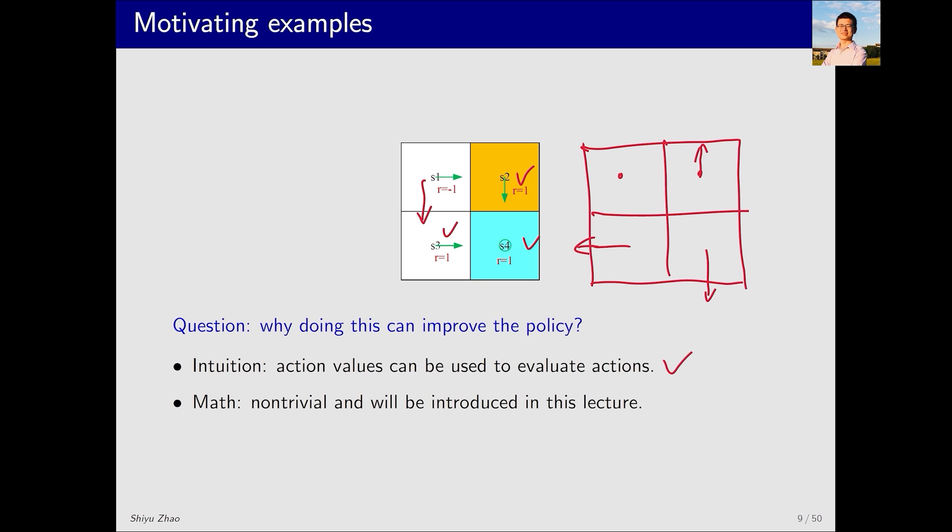But what I can tell you is that by repeatedly performing this process and iterating, we will eventually reach an optimal policy. That is, for every state, we choose the action with the highest action value, iterate to get a new policy, and continue iterating to refine the policy until it converges to the optimal one. The mathematical tool for analyzing this process is precisely the Bellman optimality equation.